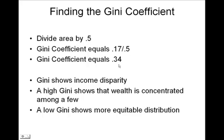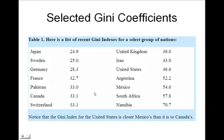The Gini coefficient shows income disparity. A high Gini coefficient shows that wealth is concentrated, and a low Gini coefficient shows a more equitable distribution. Here I have a few selected countries with their Gini coefficients. Notice that wealth is concentrated in the United States among a few, and in a country such as Namibia, it's an even higher concentration. This concludes my PowerPoint presentation — I thank you for listening.